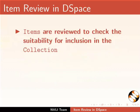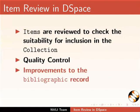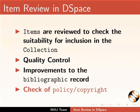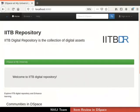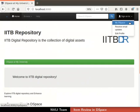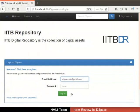Items are reviewed to check the suitability for inclusion in the collection. The objective of item review is quality control, improvements to the bibliographic record and checking of policy or copyright. Now let us proceed to accept the item review task. Open a web browser, go to the DSpace interface, and login with a reviewer's account.